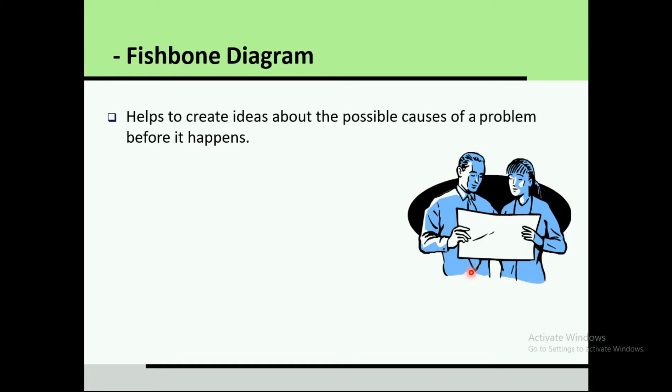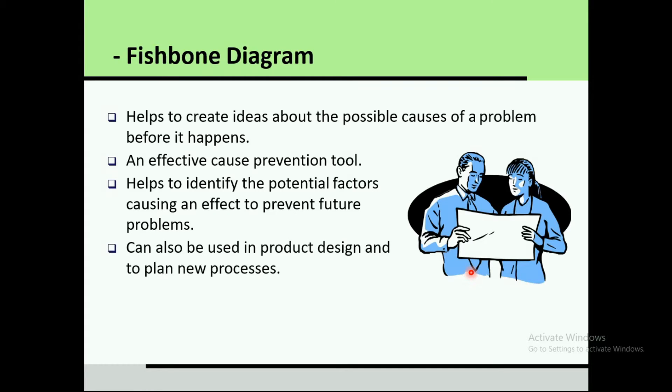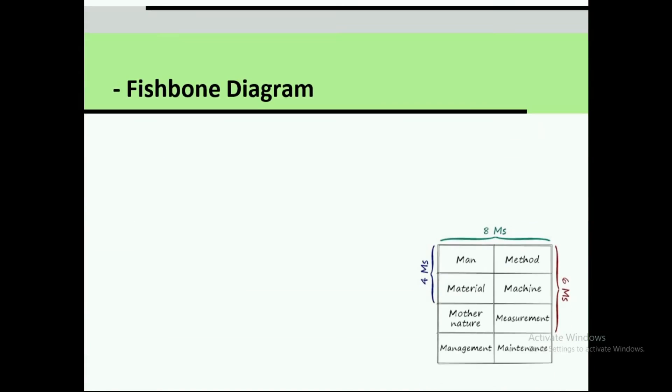The fishbone diagram is not only used after a problem occurs — it can also be used before problems occur, making it a preventive tool. It can be used in preventive maintenance as an effective cause-prevention tool, helping to identify potential factors that could cause an effect in order to prevent future problems.